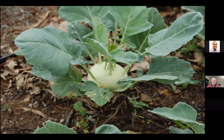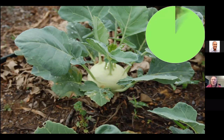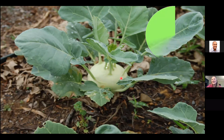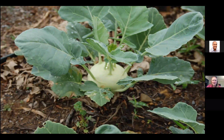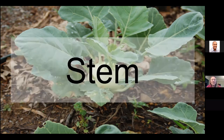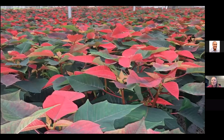We're looking at kohlrabi. The white part — is it a root, leaf, fruit, or stem? We've got some different answers: root, stem, root stem. Actually that white part of the kohlrabi is a stem — again, it's a modified stem. It's an enlarged, condensed stem, and that is the part of the plant that we eat.